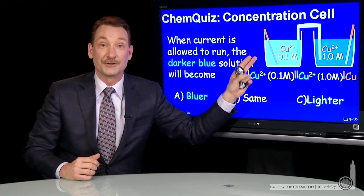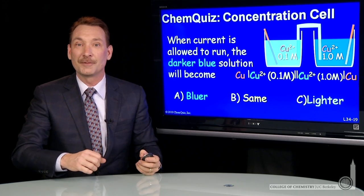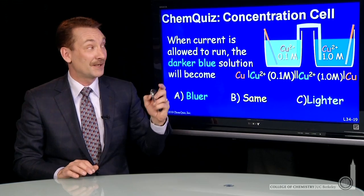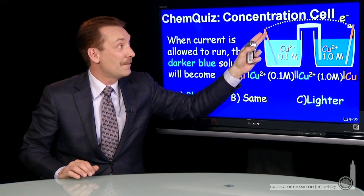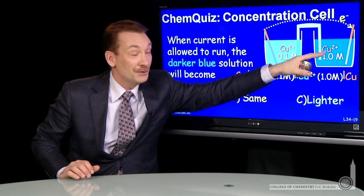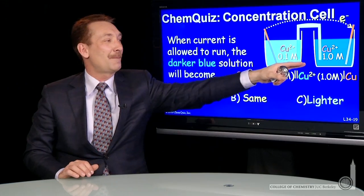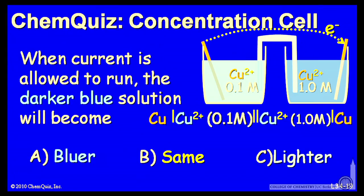What would happen if you mixed those two? They would mix together, and you'd have an equilibrium concentration at the end — the darker would become lighter blue. And that's exactly what would happen if you allow current to flow. When current flows, it would flow from this copper metal to that copper metal. It would reduce copper ions here and reduce the copper ion concentration, and that cell would go to lighter color. So the correct answer is lighter, just as if you mixed them together.